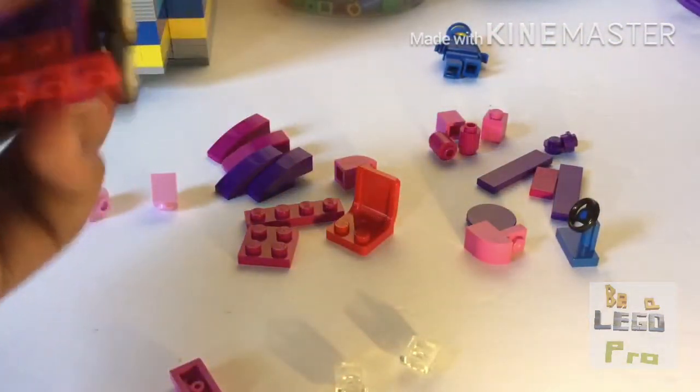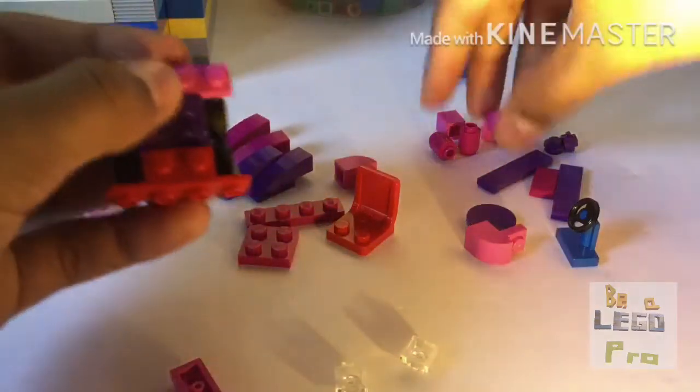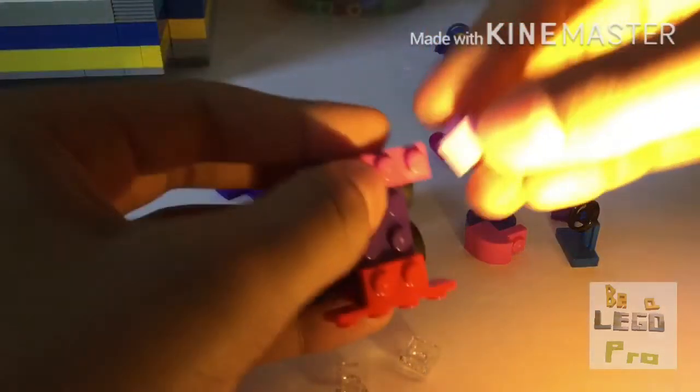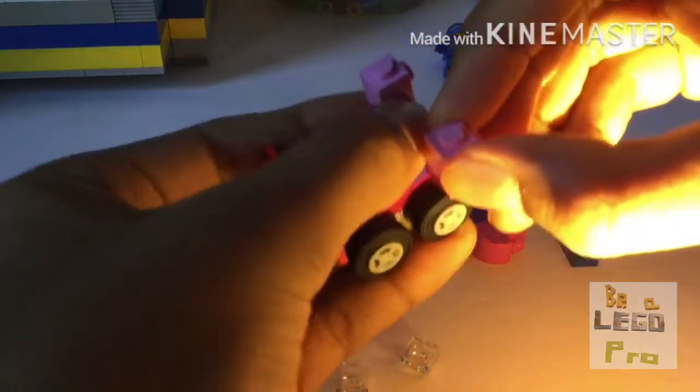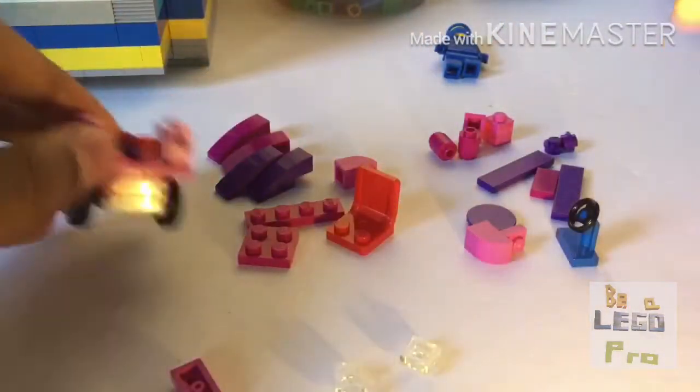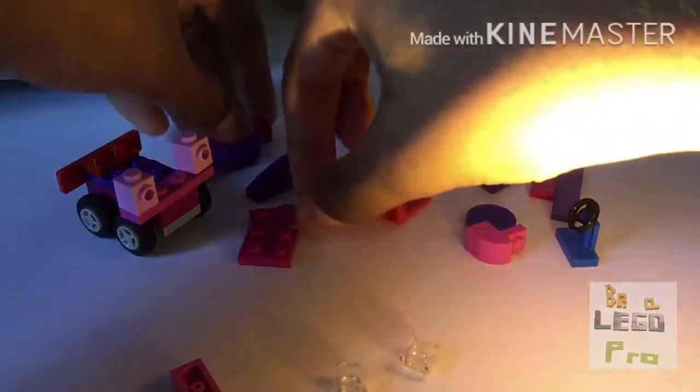Let's get back to the build. Put two of these one by fours right here, then take those one by two bricks with the stud on the side and put them on right there so it faces this way. Keep that to the side.